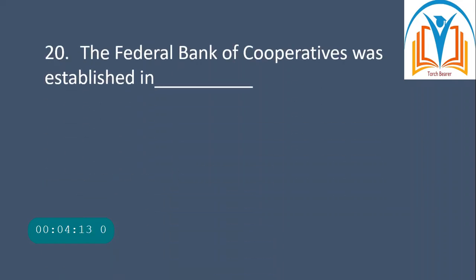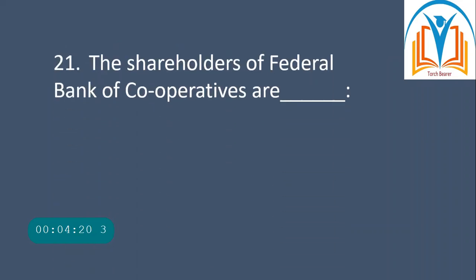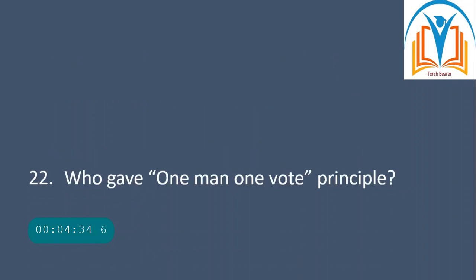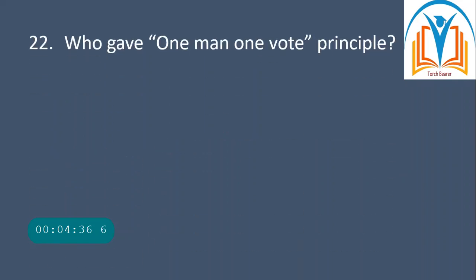The Federal Bank of Cooperatives was established in 1976. Next question: who are the shareholders of the Federal Bank of Cooperatives? There are three shareholders: the federal government, the four provinces of Pakistan, and the State Bank of Pakistan.